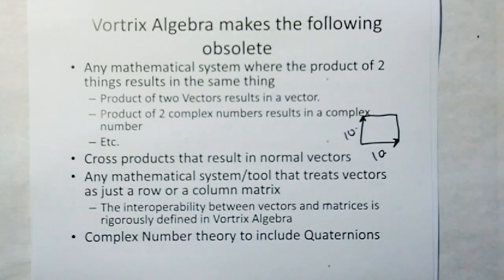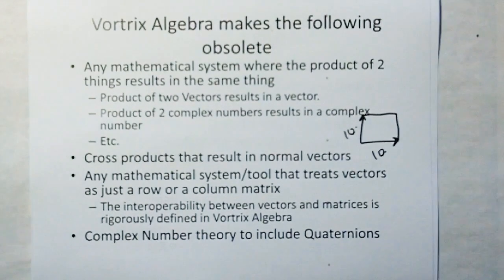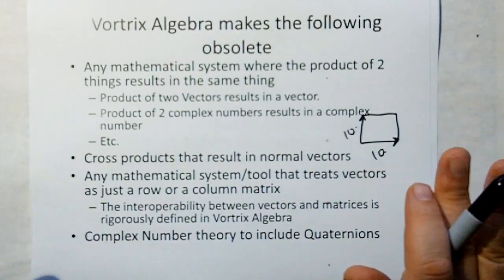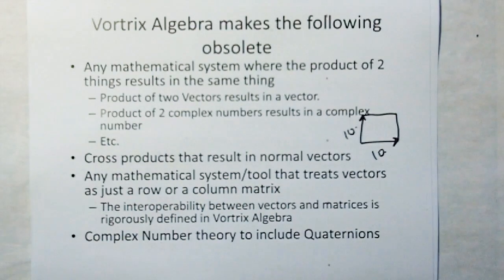Vortrix algebra also makes complex number theory to include quaternions obsolete. There's no need now to define your physics in terms of real and imaginary. With Vortrix algebra, you can now define everything in terms of real units: volts, amps, dimensions, power, things like that. No more of this imaginary space ridiculousness. That's gone. Absolute.